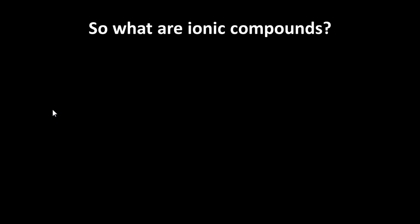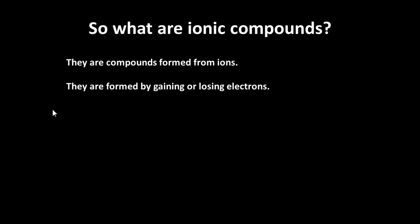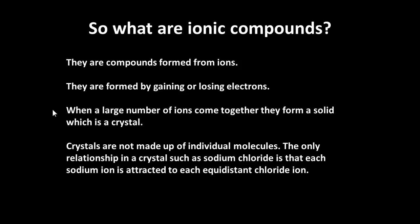Okay, what else do we know about ionic compounds? They're compounds that form ions. They form them by gaining or losing electrons. In the solid phase, these form crystals. And crystals aren't made up of individual molecules. They have a lattice relationship. So that for each sodium ion, there's an equidistant chloride ion and vice versa. But there aren't distinct partners or groups.